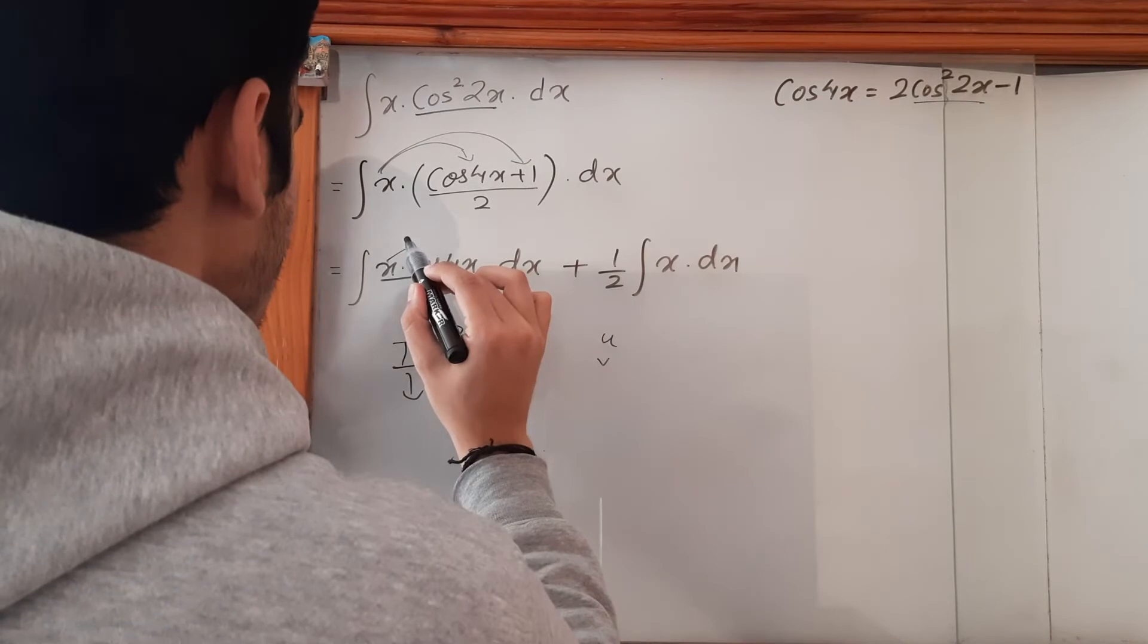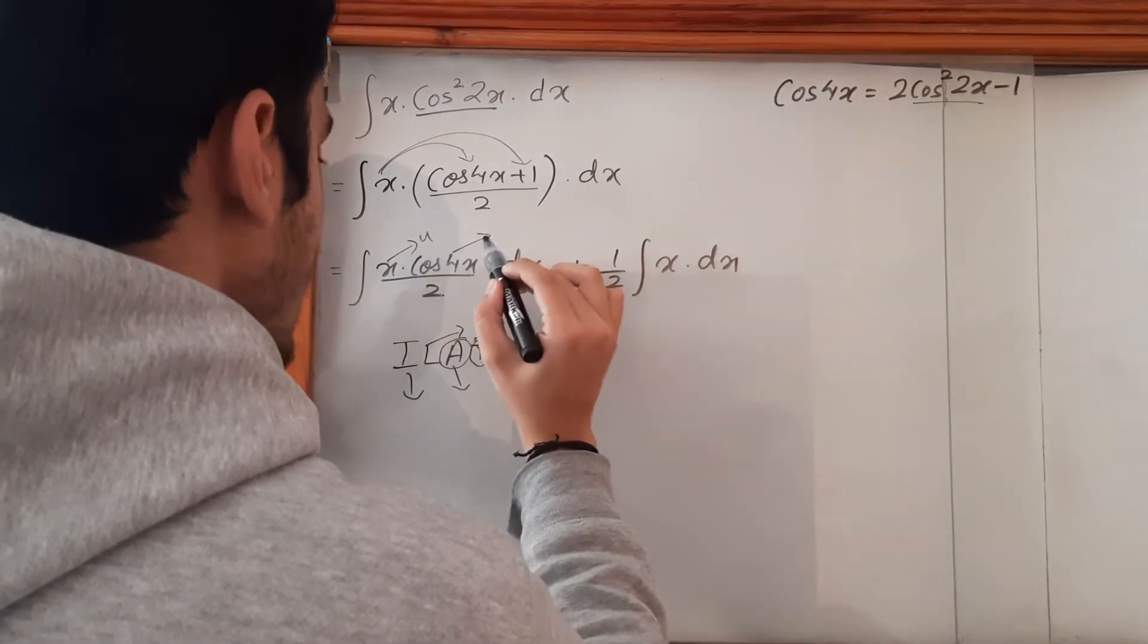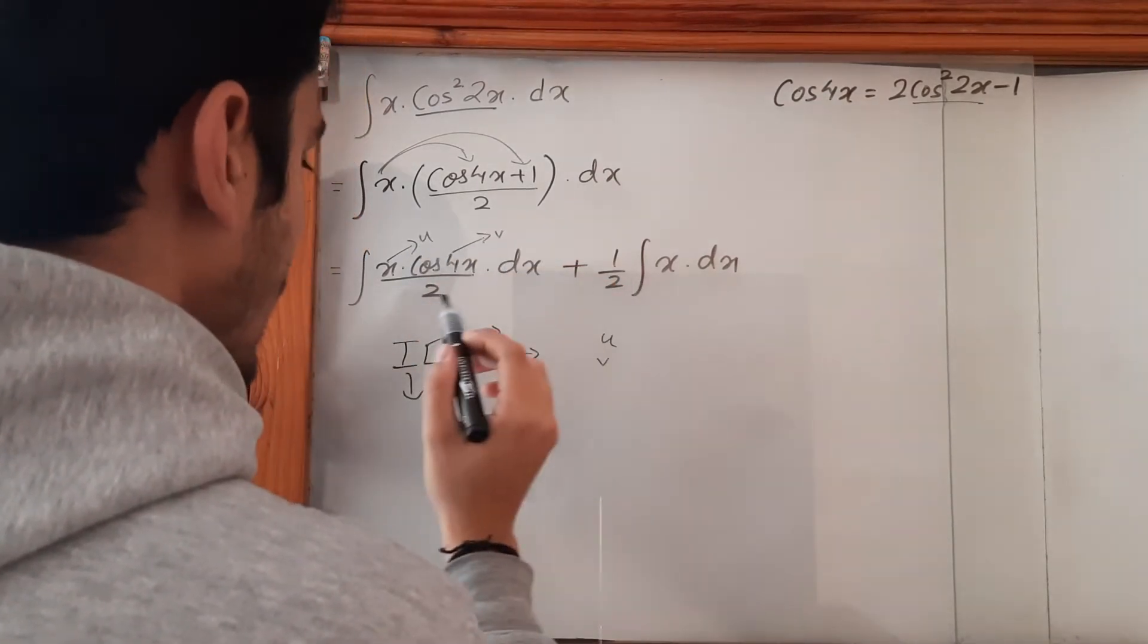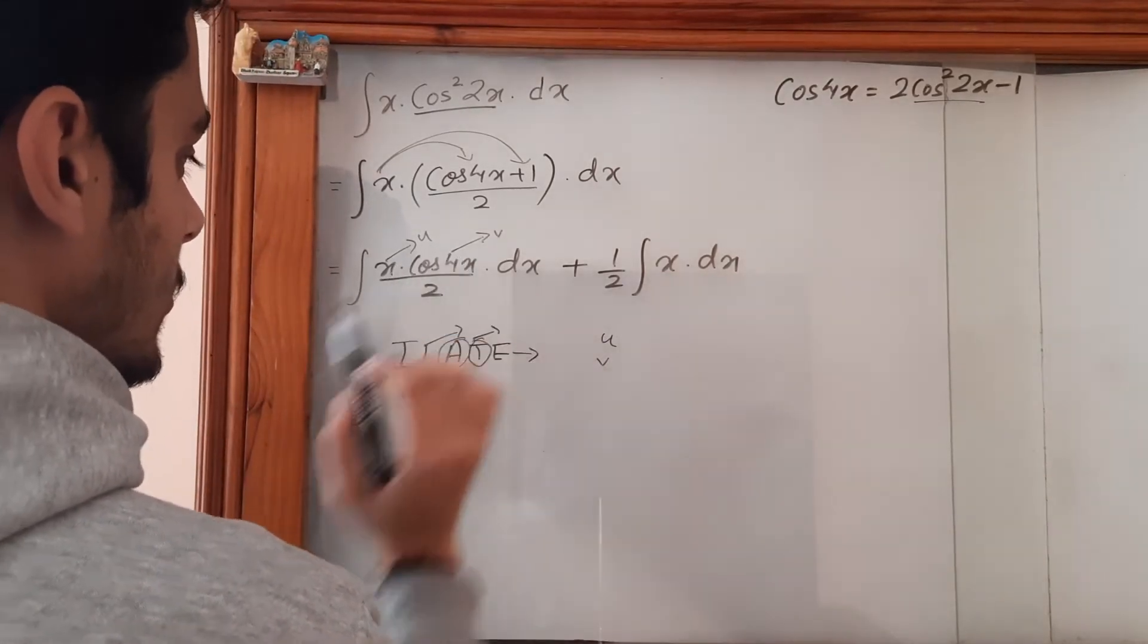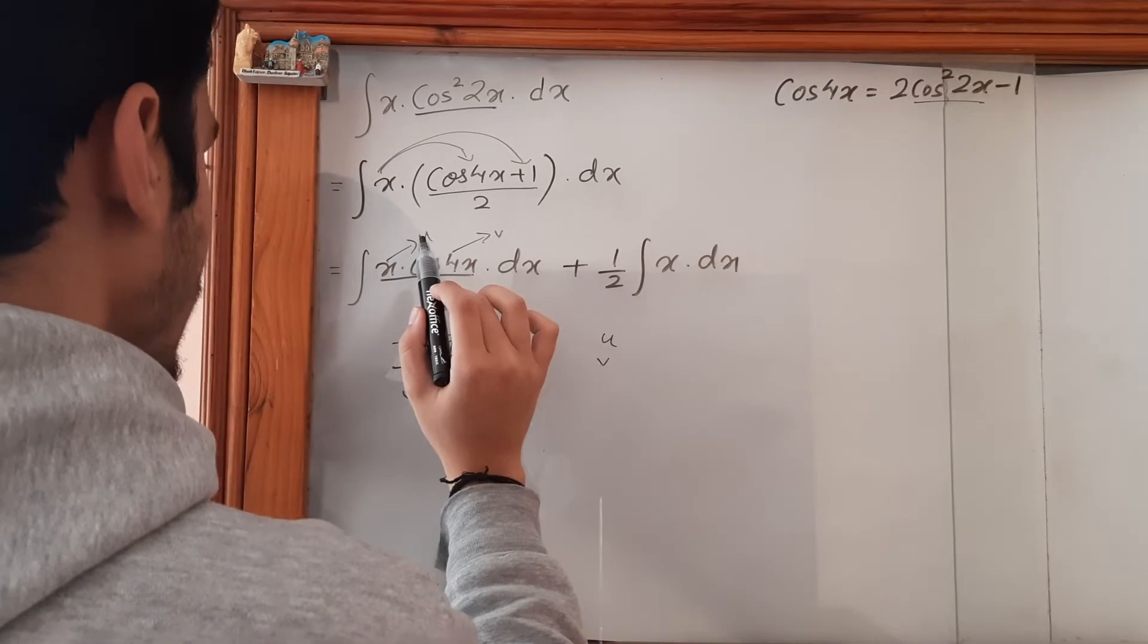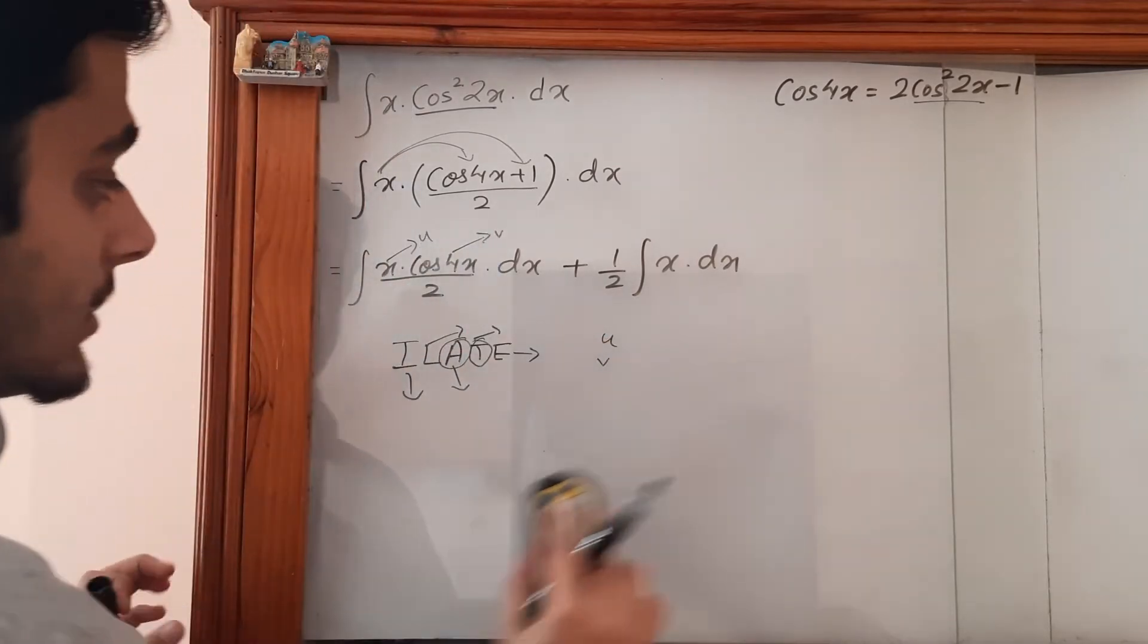So this is u, this is v. You can do it the other way as well—make this v and suppose this to be u—but for now let's suppose this to be u and this to be v.